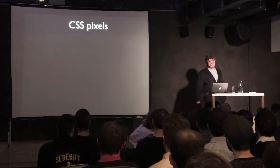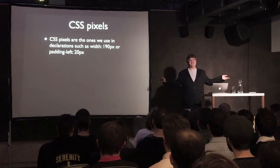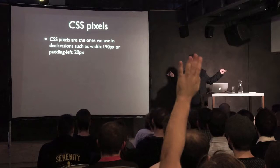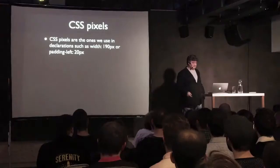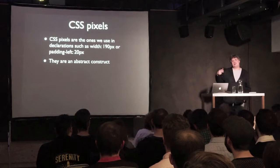What are these two pixels? CSS pixels are by far the most important, and they're really simple: they are the pixels you use in CSS. If you write width 190 pixels, padding-left 20 pixels — that's CSS pixels. It's best to see them as an abstract construct.